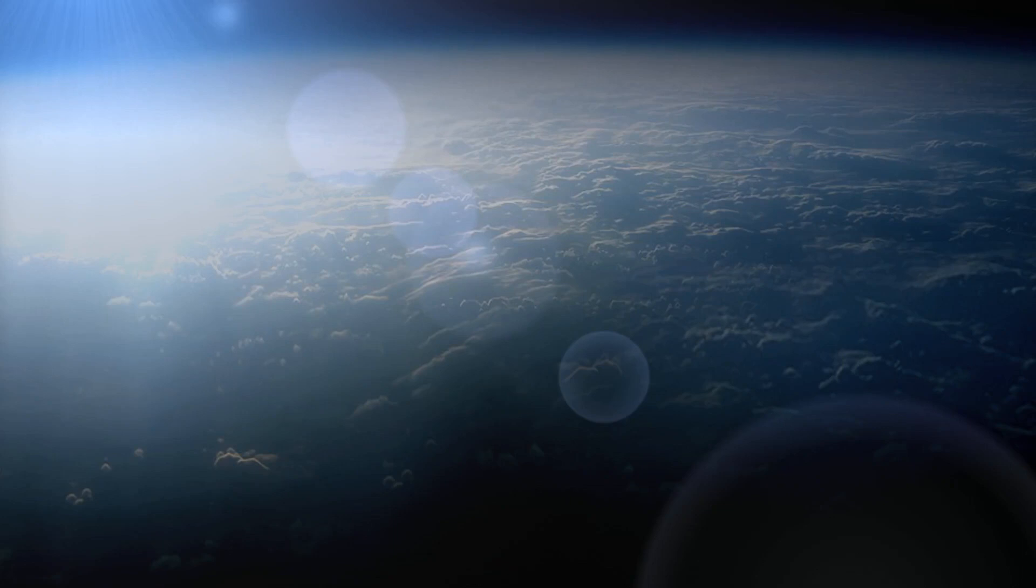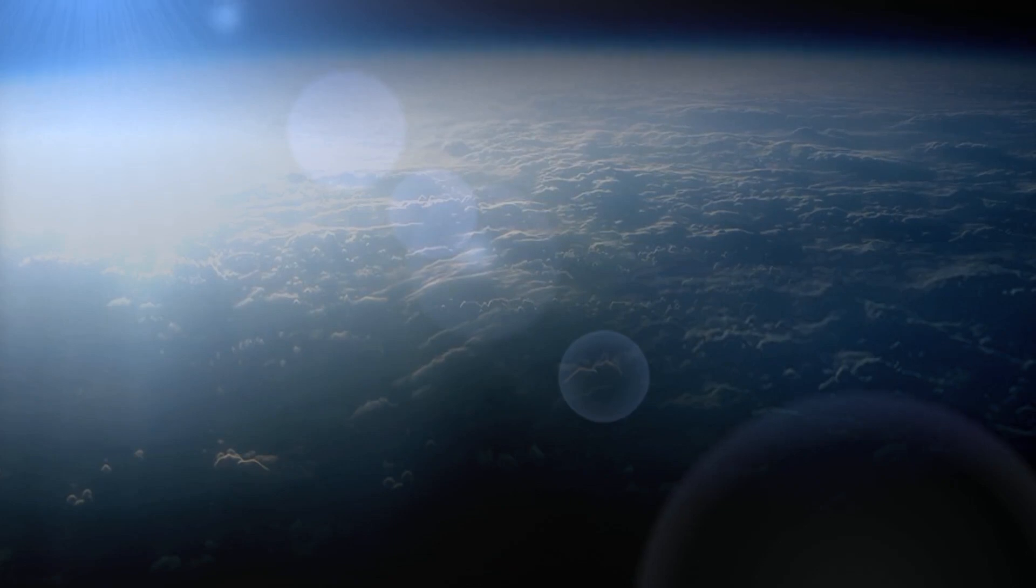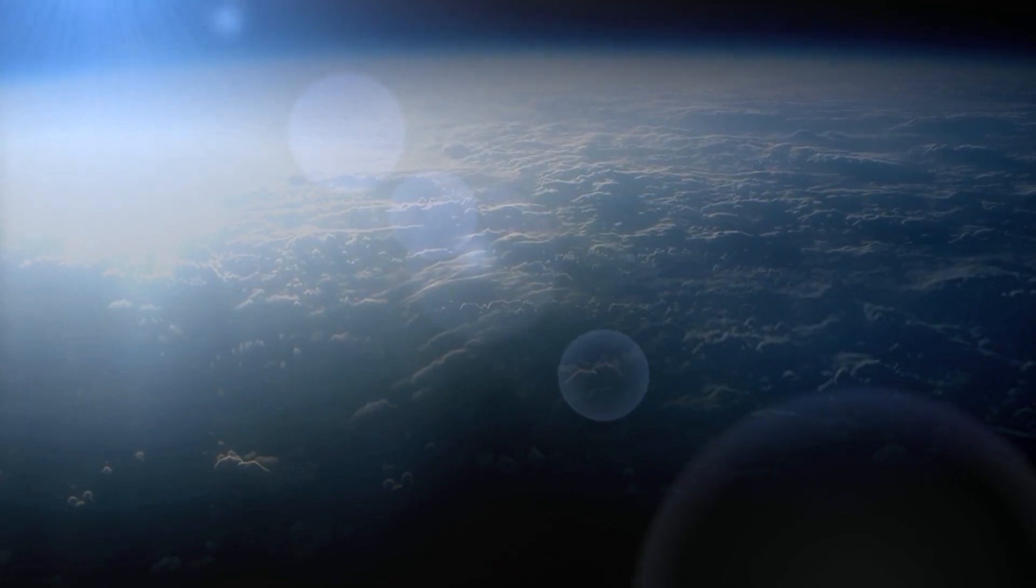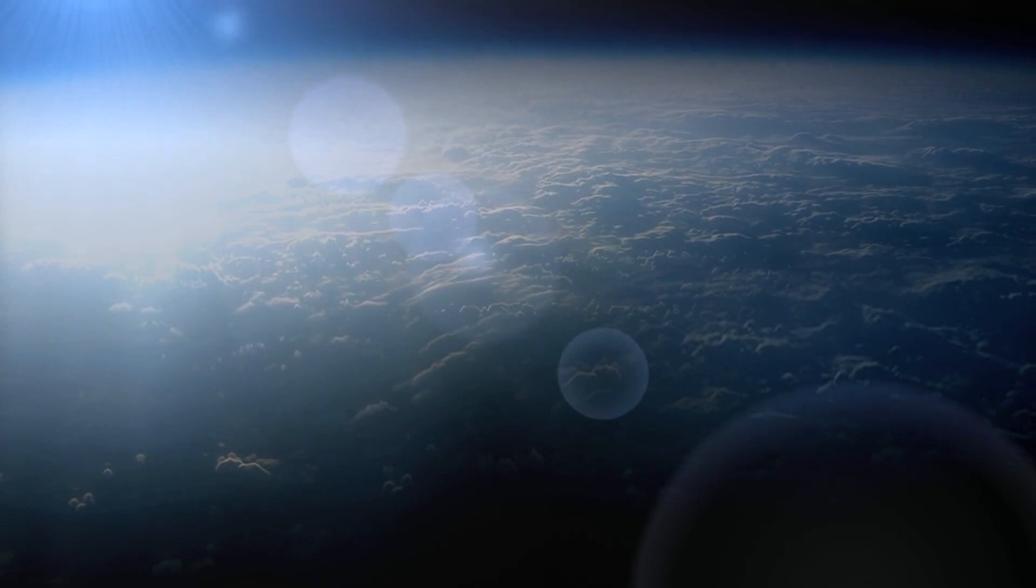VLEO is a really cool orbit. It's basically the edge of space. Think about where the atmosphere of Earth ends and space begins. You still have in VLEO orbit, which is about 200 to 300 kilometers from the ground, you still have a little bit of atmosphere.